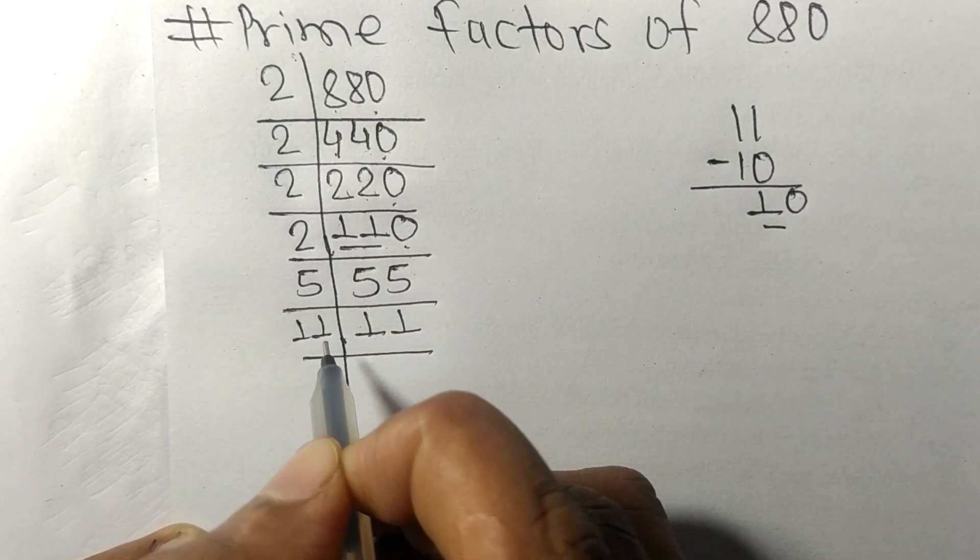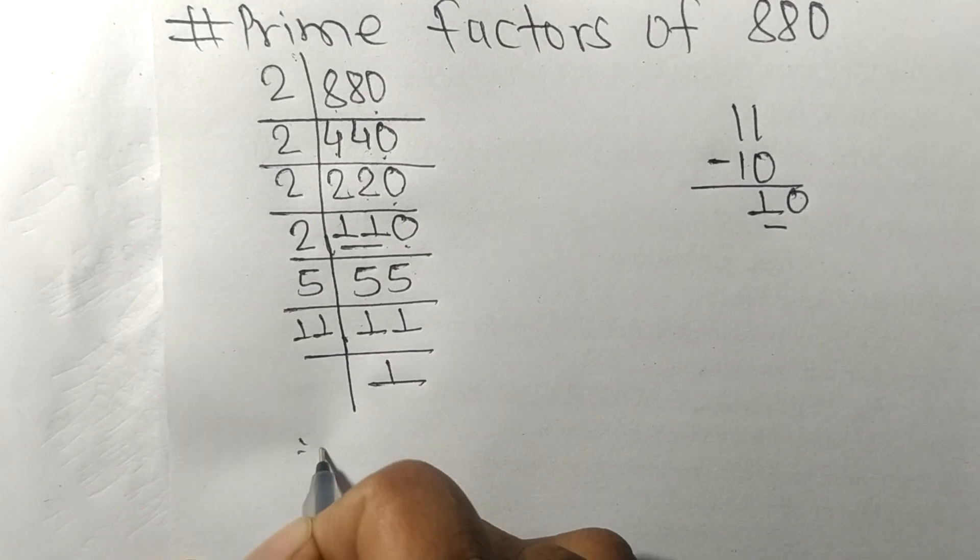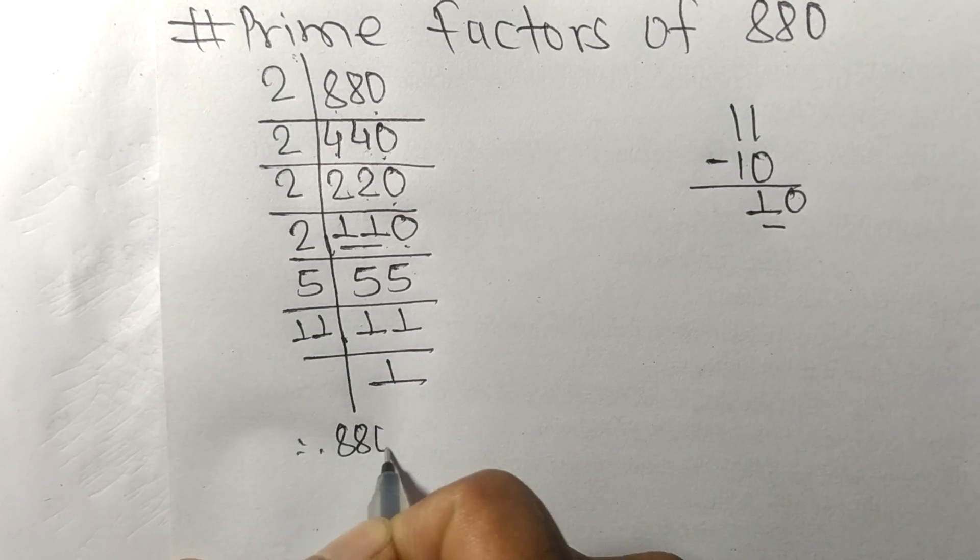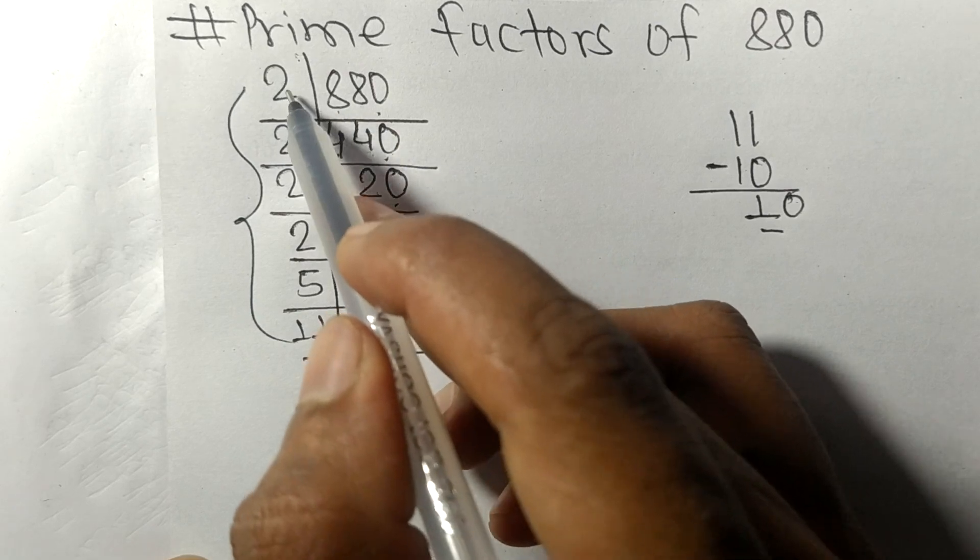Therefore, 880 equals - from this side it is 1, 2, 3, 4 times 2 - so four times 2, then 5 and 11.